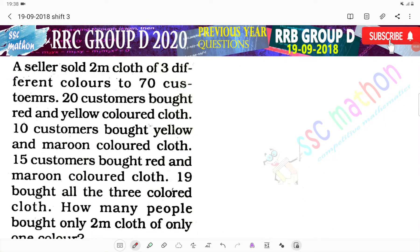Hello everyone, welcome back to SC Math and RRB Group D 2018 questions. A seller sold 2 meter cloth of three different colors to 70 customers. 20 customers bought red and yellow colored cloth.